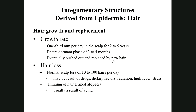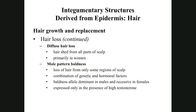If a follicle doesn't replace a shed hair, that leads to thinning and balding. Normal hair loss from the head is about 100 hairs a day. If you're losing too much, something may be going on — drugs, diet, radiation, stress, or fever. Thinning and loss of hair is referred to as alopecia. Females tend to exhibit diffuse hair loss — thinning across all parts of the scalp rather than patches. Males tend to have patterns of total baldness in specific regions — male pattern baldness is a sex-linked trait more active in males than females.